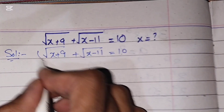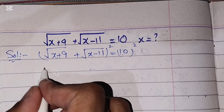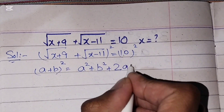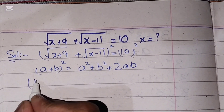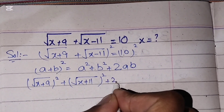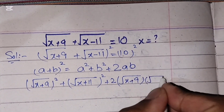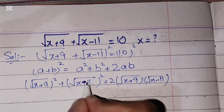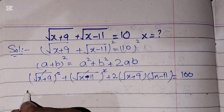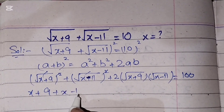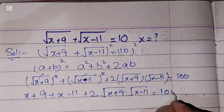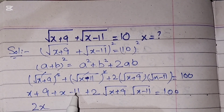We will start the solution. In the first step, we will take the square on both sides. Using (a + b)² = a² + b² + 2ab, the left side becomes: square root of (x + 9) squared, plus square root of (x - 11) squared, plus 2 times square root of (x + 9) times square root of (x - 11), equals 10² = 100. The square root and square cancel, giving x + 9 + x - 11 plus 2·√(x+9)·√(x-11) = 100. That simplifies to 2x - 2.